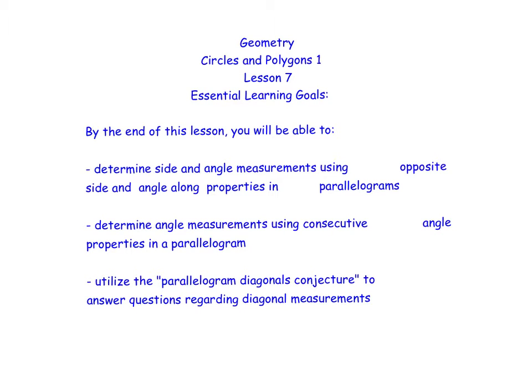Alright, Geometry Unit 4, Lesson 7. Objectives here, as you can see, are to determine side and angle measurements using opposite side and angle properties, determine angle measurements with consecutive angle properties in a parallelogram, and utilize the parallelogram diagonal conjecture to answer some questions. So let's get into it.